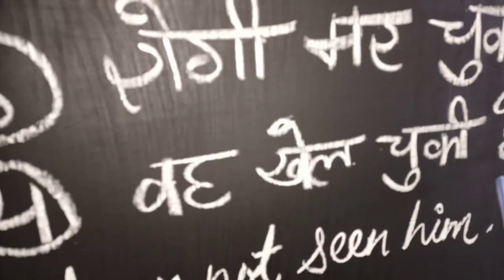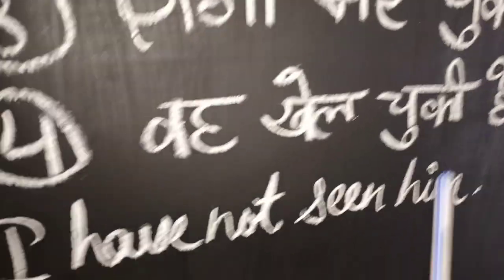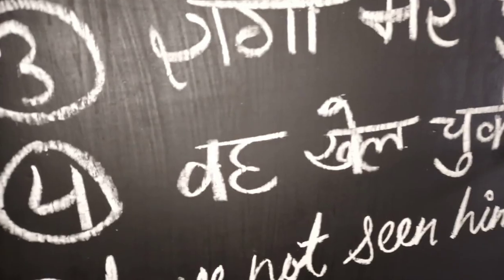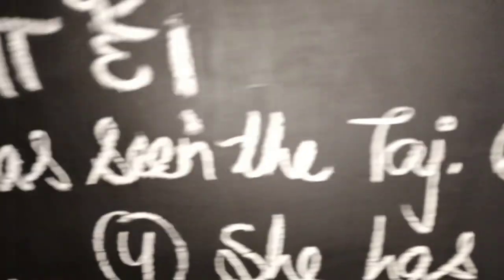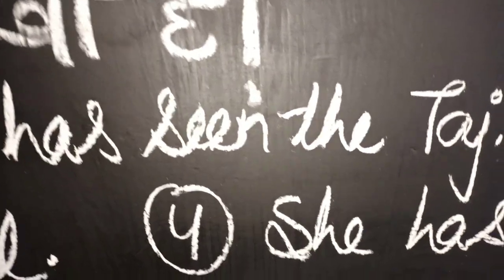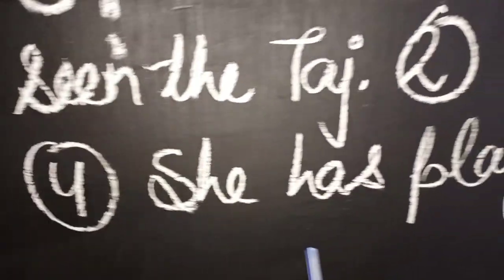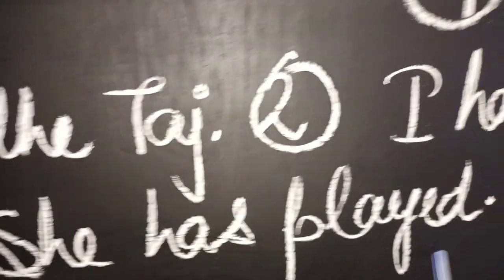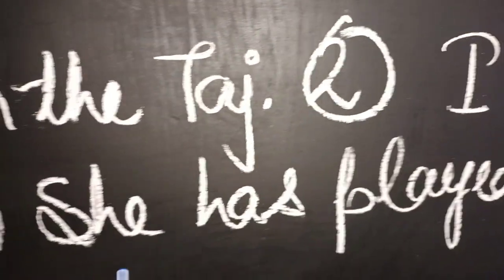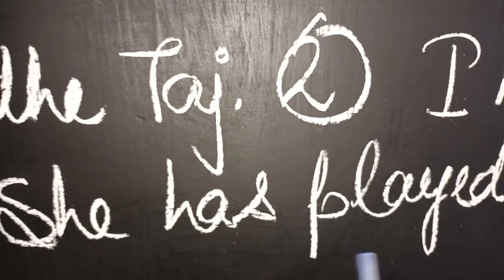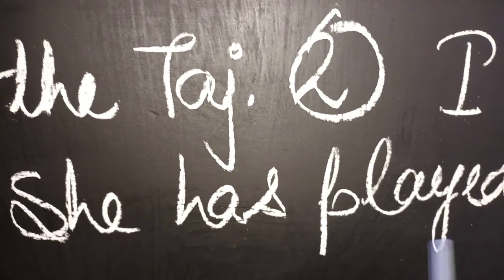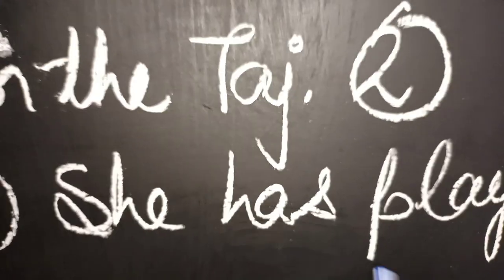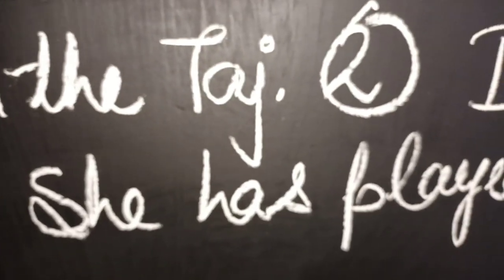The fourth sentence: 'She has played.' Since the subject is a girl we use 'she,' and with 'she' we use 'has,' then the verb in third form — 'played.' So the sentence becomes: 'She has played.' Do these sentences and practice some more. Thank you.